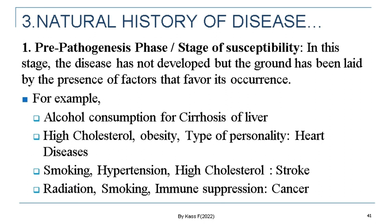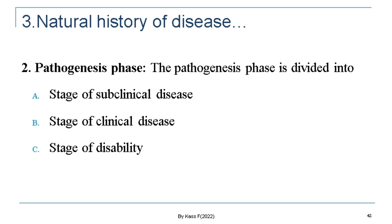In the pre-pathogenesis phase — also called the stage of susceptibility — the disease has not yet developed, but the ground has been laid by the presence of factors that favor its occurrence. For example, alcohol consumption for cirrhosis of the liver, high cholesterol and obesity for heart disease, and smoking, hypertension, and high cholesterol for stroke, as well as radiation, smoking, and immune suppression for cancer. Under the pathogenesis phase, it can be divided into three stages: the stage of subclinical disease, the stage of clinical disease, and the stage of disability.